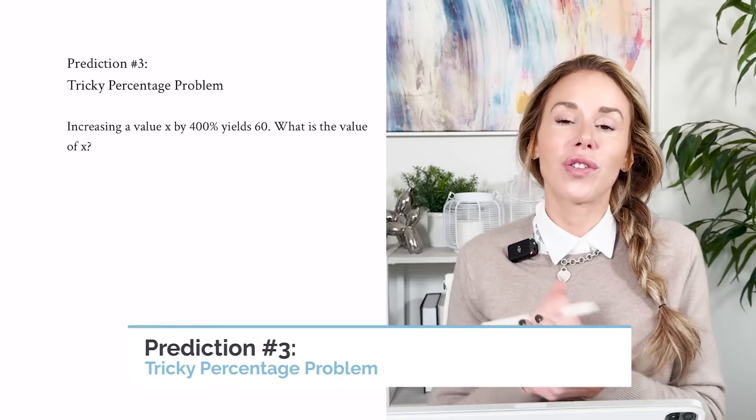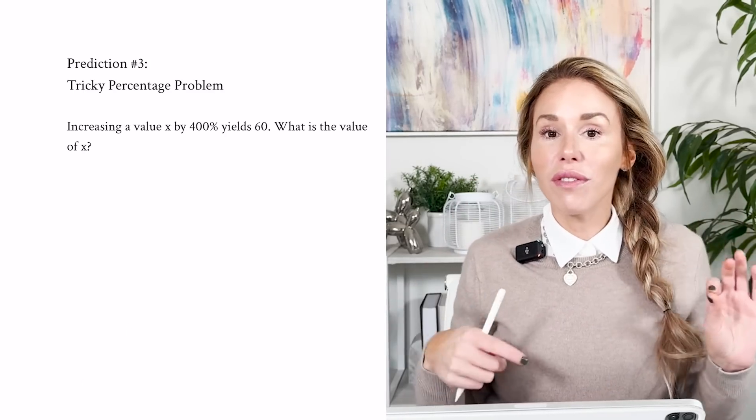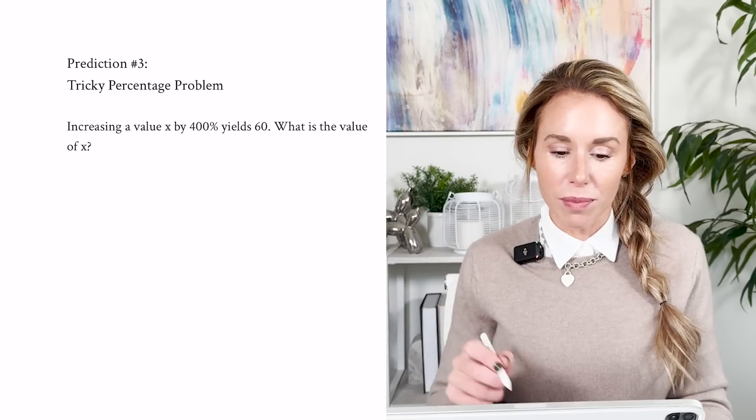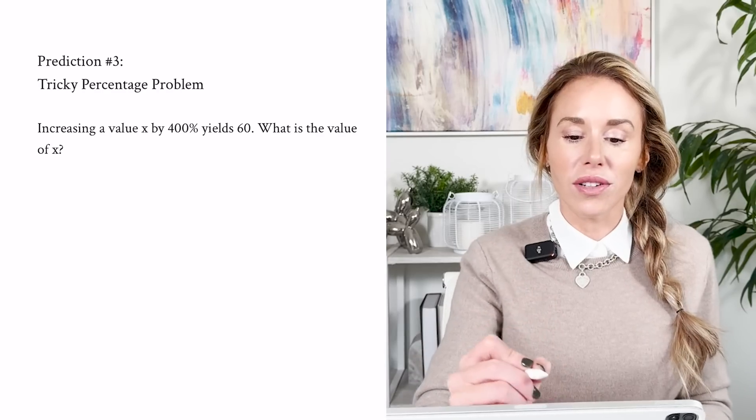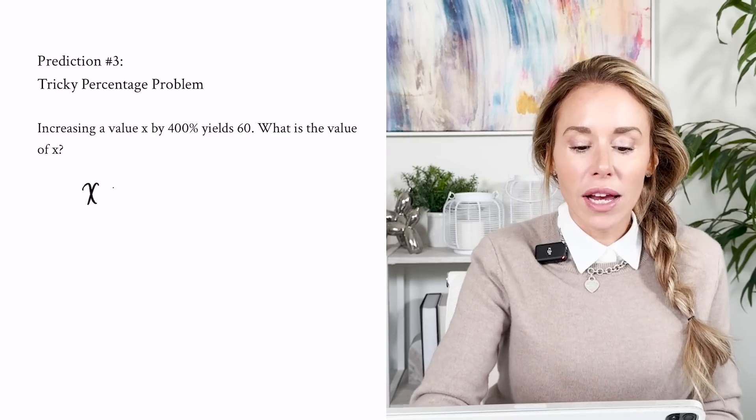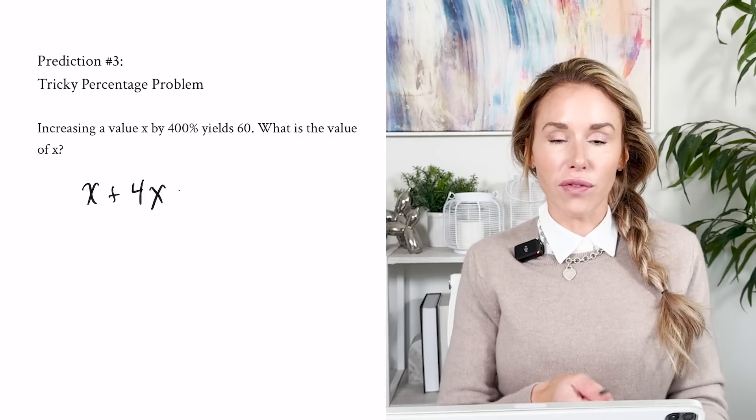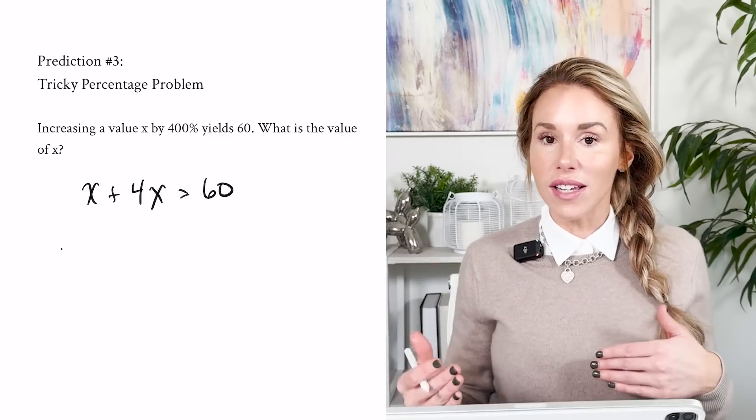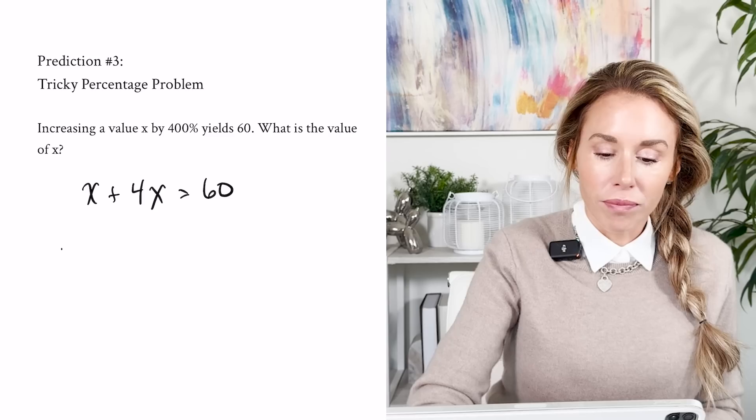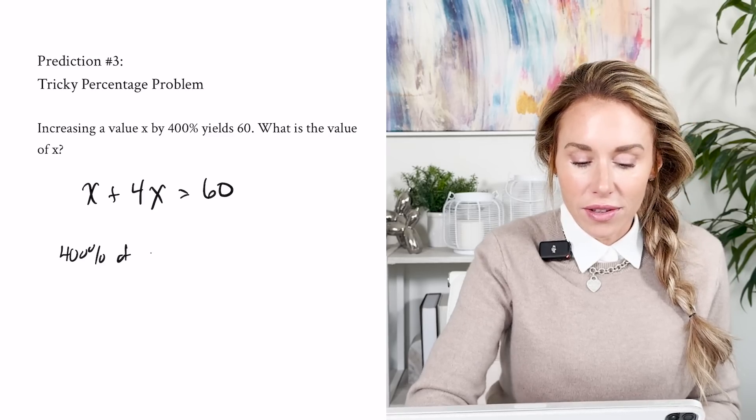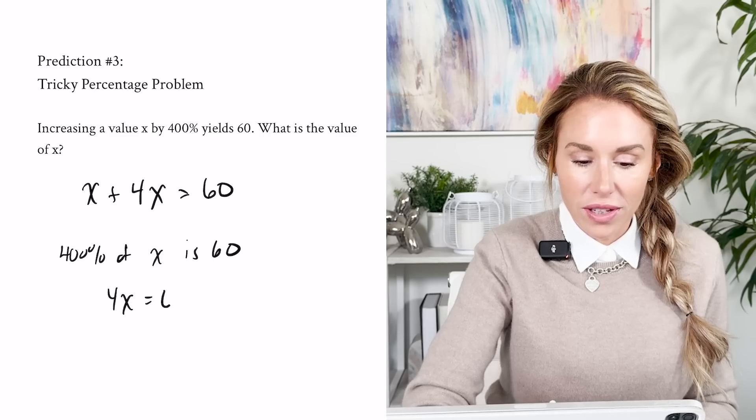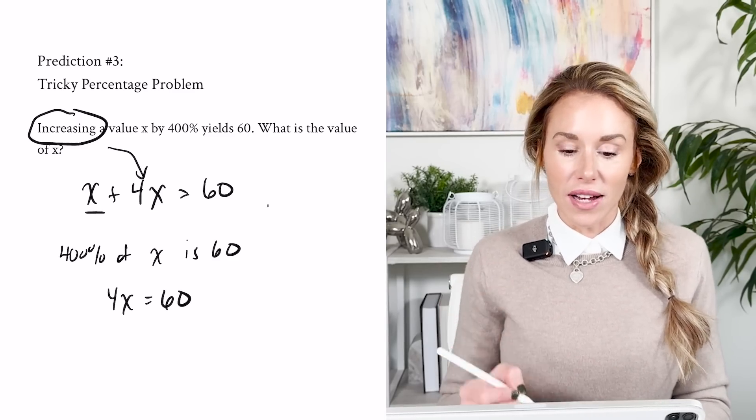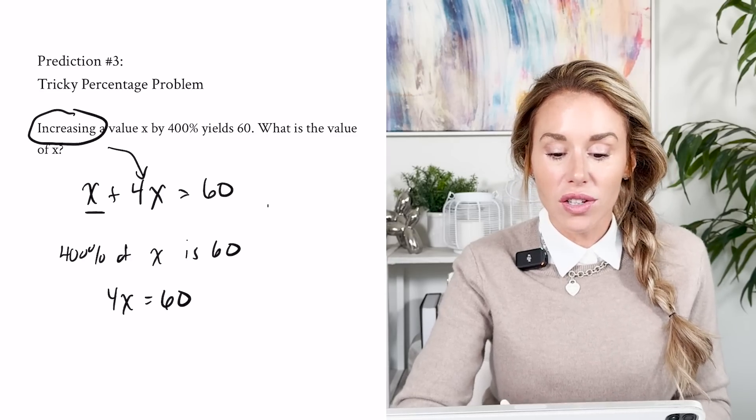All right, my third prediction deals with getting a tricky percentage problem. What I want you guys to do is be mindful if the problem says it's increasing or it's just a percentage of something. Okay, so let me demonstrate. It says increasing a value X by 400% yields 60. Okay, setting this up properly is everything. We start with a value X, then we're increasing it by 400%. So I'm taking X, I'm adding 400% of X to X, then that equals 60. Okay, too many students set it up as 4X equals 60 and then they end up getting it wrong. If it said 400% of X is 60, then you're going to write 4X equals 60. But because of that word increasing, you have to add the 400% onto the X, if that makes sense. So then you end up basically getting 5X equals 60, so X is going to be 12.